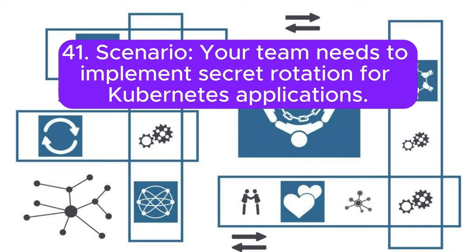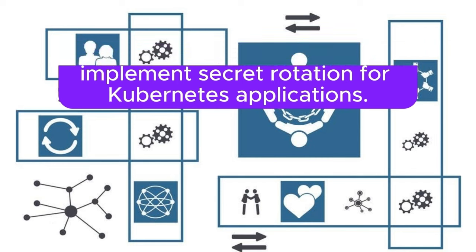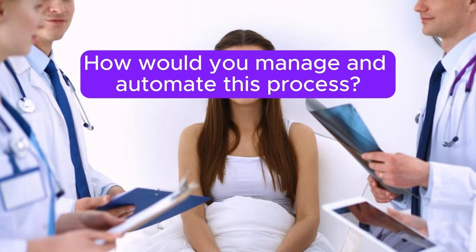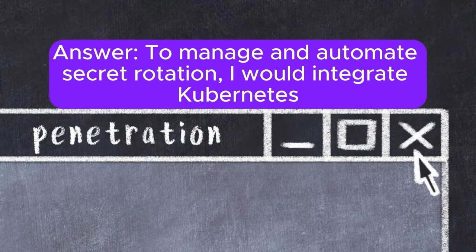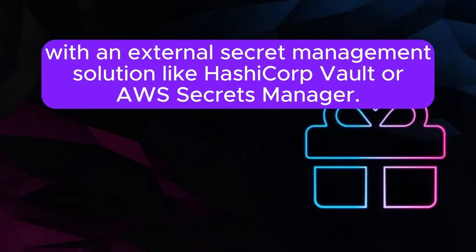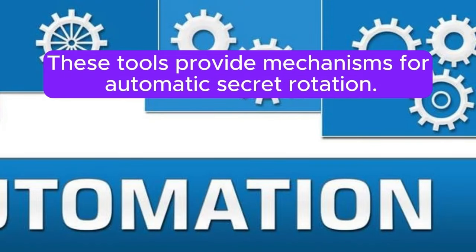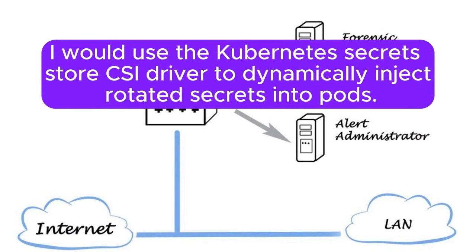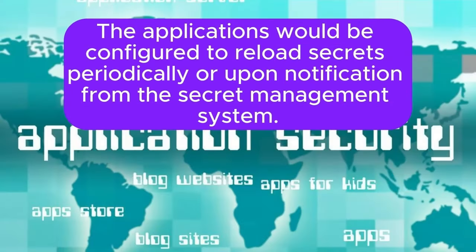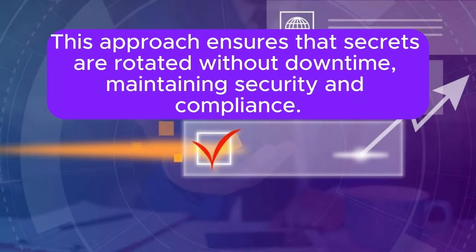Scenario 41: Your team needs to implement secret rotation for Kubernetes applications. How would you manage and automate this process? Answer: To manage and automate secret rotation, I would integrate Kubernetes with an external secret management solution like HashiCorp Vault or AWS Secrets Manager. These tools provide mechanisms for automatic secret rotation. I would use the Kubernetes Secret Store CSI driver to dynamically inject rotated secrets into pods. The applications would be configured to reload secrets periodically or upon notification from the secret management system. This approach ensures that secrets are rotated without downtime, maintaining security and compliance.